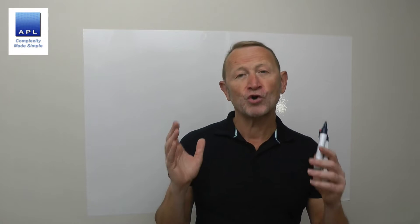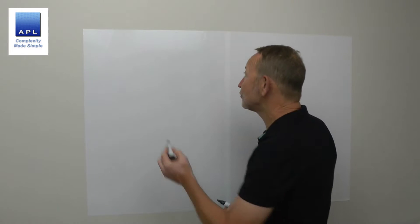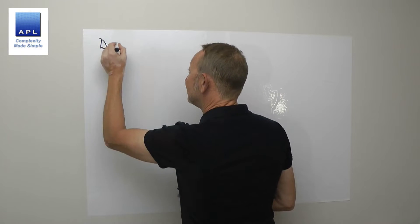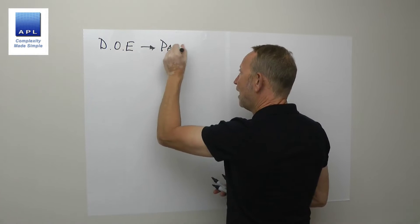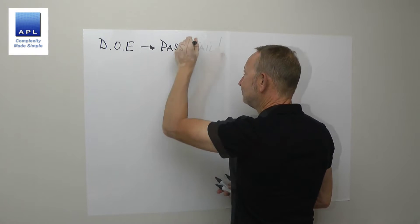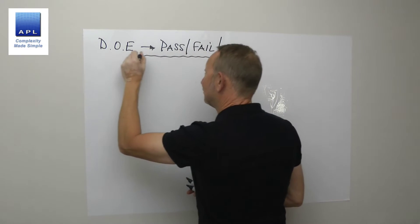Welcome to Complexity Made Simple. In this video and newsletter, we're going to take a look at running a designed experiment with pass-fail data. So it's a DOE, but your output is pass-fail.